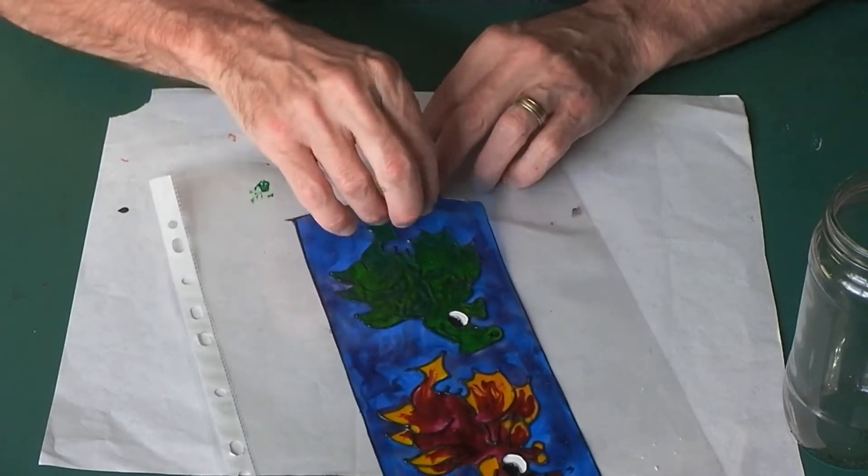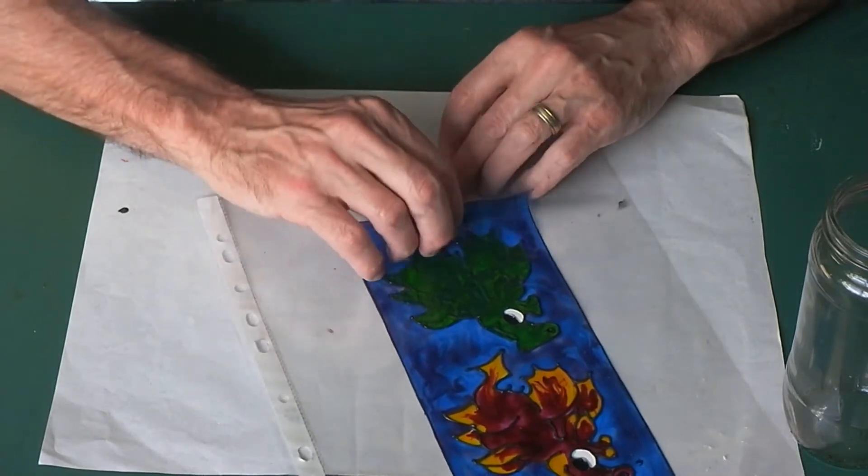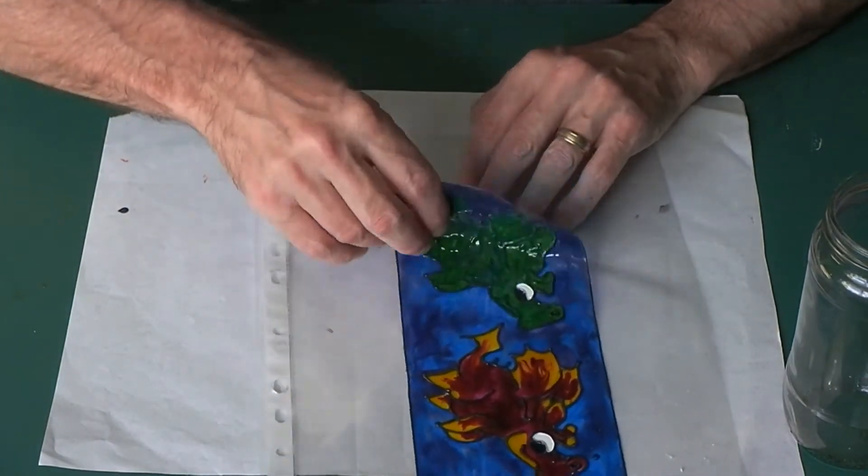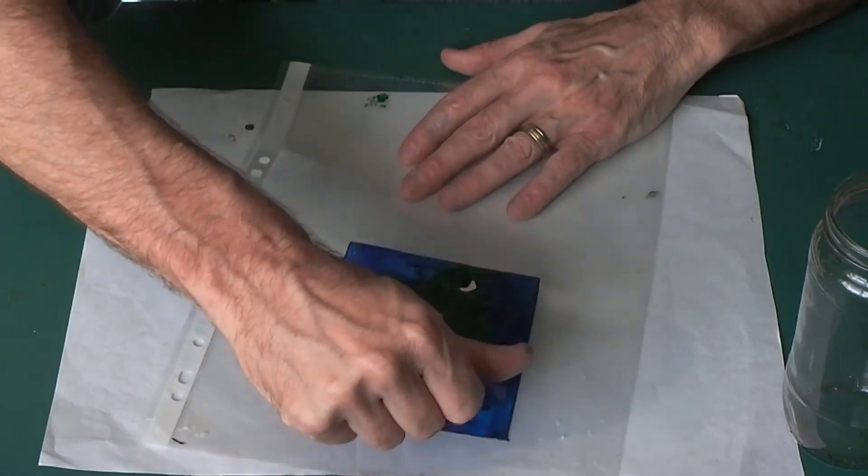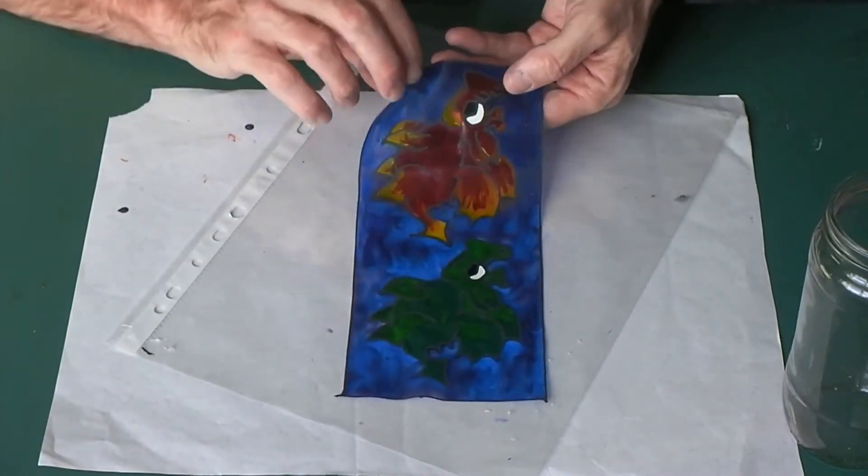If it does break, don't worry too much. You will be able to stick it back together when you put it down on the jar. But this is coming off absolutely fine. Turn upside down.